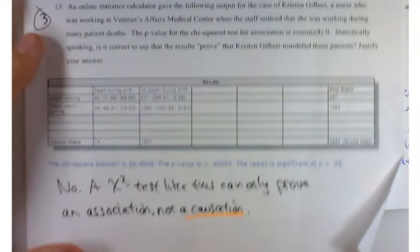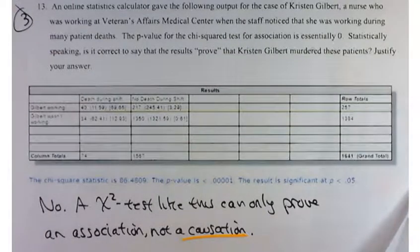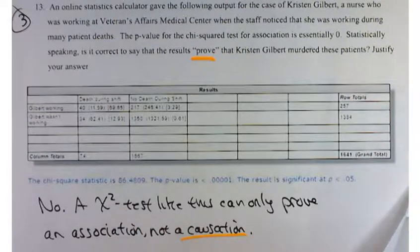The only thing that they can show is an association. So in the case of Kristen Gilbert, there's an association between her working and patient deaths, but it's not proof. You can't conclude that she's guilty because there's no causation here. You did really well on that, and I was very happy to see that.